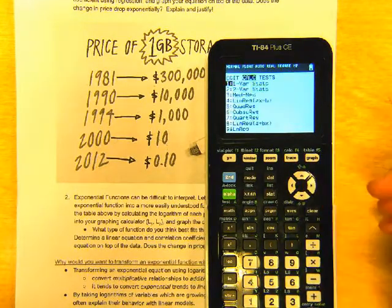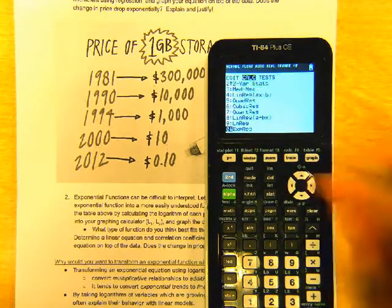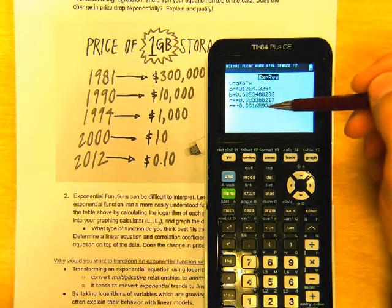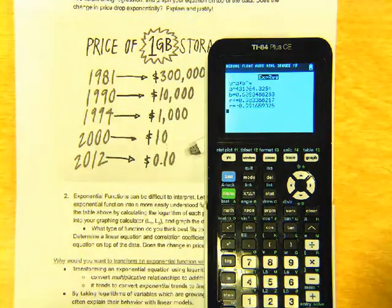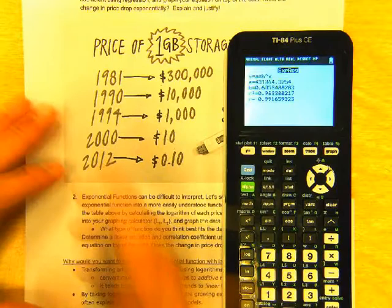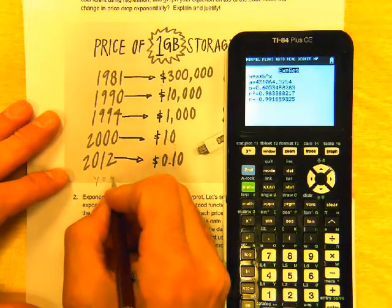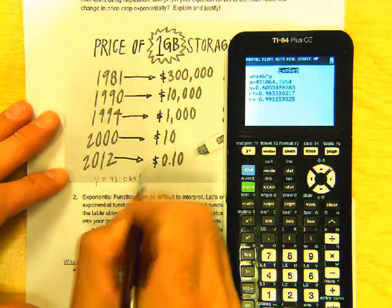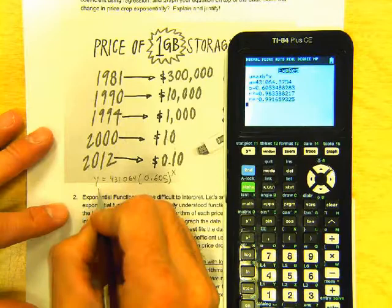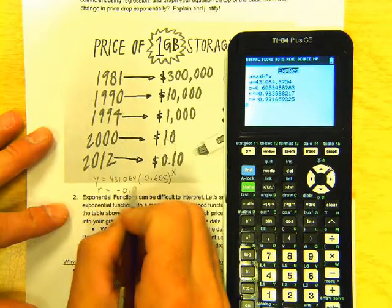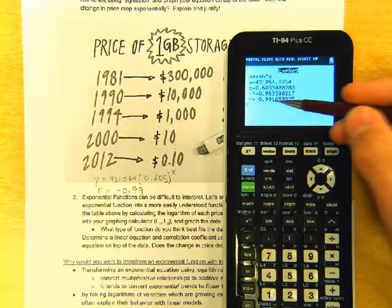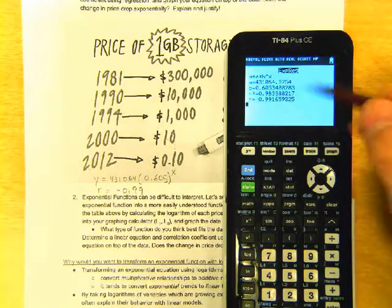Now press STAT, go sideways to calculate, go down to 0, do the exponential regression, and you should get an equation. What you'll notice is that the A value and the B value, you should write those down. So, I'm just going to scrawl it in here. Y equals 431064 times the B value, which is 0.605 to the X. And then, if you'll notice that the R value is negative 0.99, the fact that it's very close to the number 1 means that this is a very good equation. And it's negative, so it's going downwards.